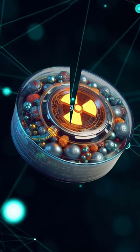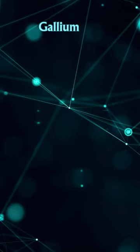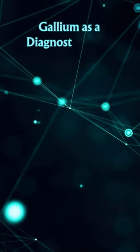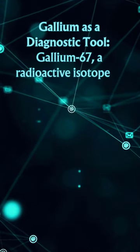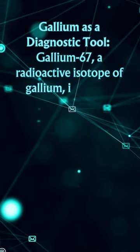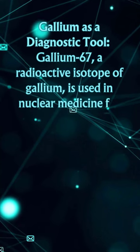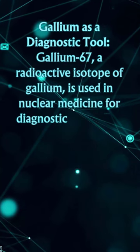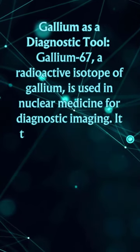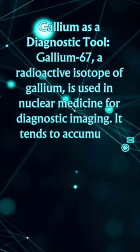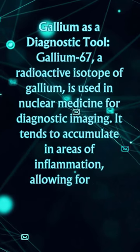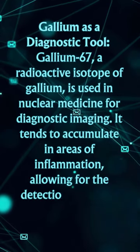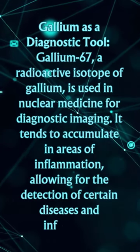Gallium-67, a radioactive isotope of gallium, is used in nuclear medicine for diagnostic imaging. It tends to accumulate in areas of inflammation, allowing for the detection of certain diseases and infections.